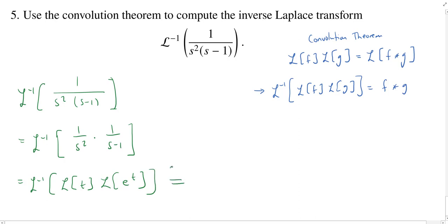And so using the convolution theorem, we can rewrite this as t convolved with e to the t. And by the previous problem that we solved, problem number 4, see that video, we know that t convolved with e to the t is e to the t minus t minus 1.